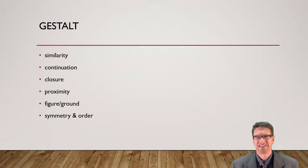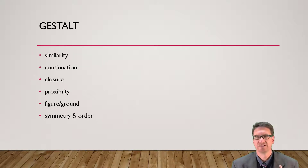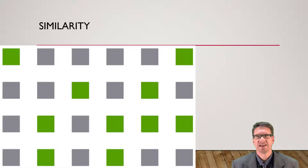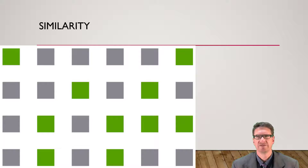There are several aspects within Gestalt: similarity, continuation, closure, proximity, figure-ground, and symmetry and order. All of these things contribute to the way that you create graphs and position multiple graphs within your engineering academic paper. In Gestalt, similar elements are visually grouped regardless of their proximity. They can be grouped by colour, shape, or size. Similarity can be used to tie together elements that might not be right next to each other in a design.